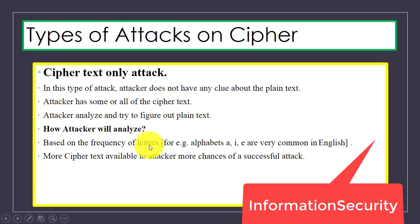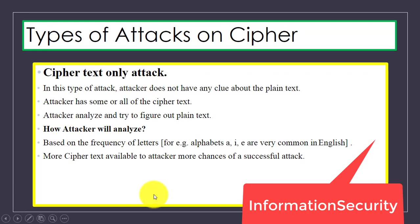As you know, in the English language, letters like 'a', 'i', and 'e' are very common alphabets. The more cipher text that is available to the attacker, the more chances of a successful attack. If less cipher text is available, there are fewer chances of a successful attack.